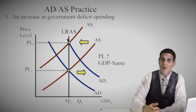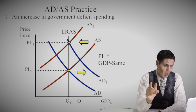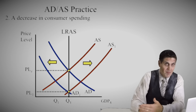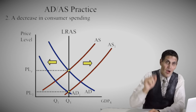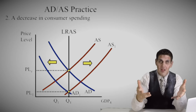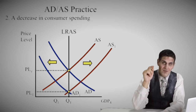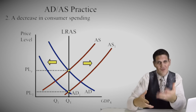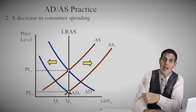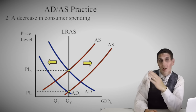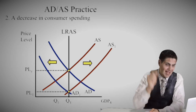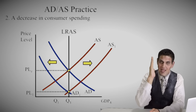Number two: a decrease in consumer spending shifts aggregate demand to the left — price level goes down, quantity goes down in the short run. But if wages are flexible and resource prices are flexible, eventually in the long run, without any government involvement, aggregate supply will shift to the right because costs fall. Workers eventually accept a lower wage, so aggregate supply shifts right. Price level will go down compared to where it started, but quantity stays exactly where it was from the very beginning. So in the long run: price level down, output stays exactly the same. Notice in questions one and two, output stays the same.